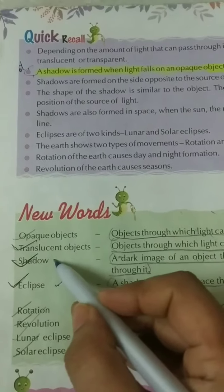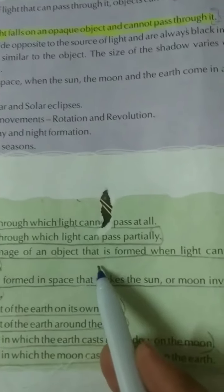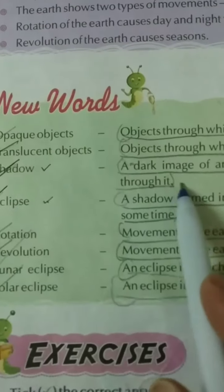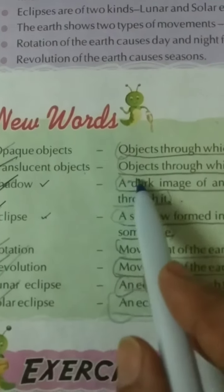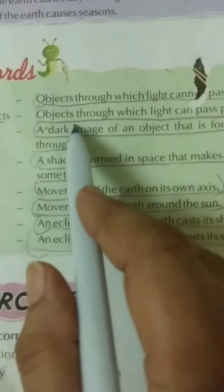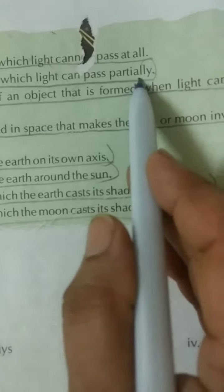Second: Shadow. A dark image of an object that is formed when light cannot pass through it. Then translucent object, third definition. Object through which light can pass partially.